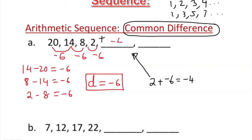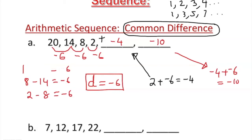The missing number is negative 4. Then the next term is negative 4 plus negative 6, which gives us negative 10. That is called an arithmetic sequence — we have a common difference, and once we have it, we can find the missing numbers. The difference is common, which is negative 6, and we use it to find the missing numbers.